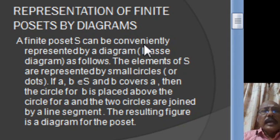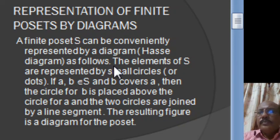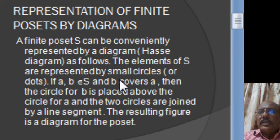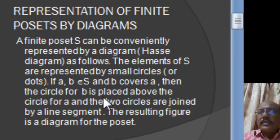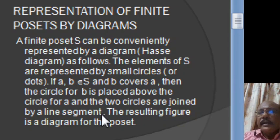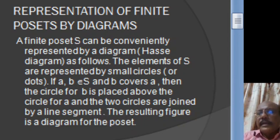A finite poset S can be conveniently represented by a diagram known as a Hasse diagram as follows: the elements of S are represented by small circles or dots. If A and B are elements of S and B covers A, then the circle for B is placed just above the circle for A, and the two circles are joined by a line segment. The resulting figure is a Hasse diagram for the poset.